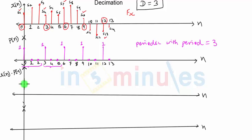The very first sample I read from x of n will be the sample at n equal to 0. The remaining two samples will be multiplied to 0 because p of n is equal to 0. The sample at 3 will be multiplied with 1, so I'll read the sample at 3 also.